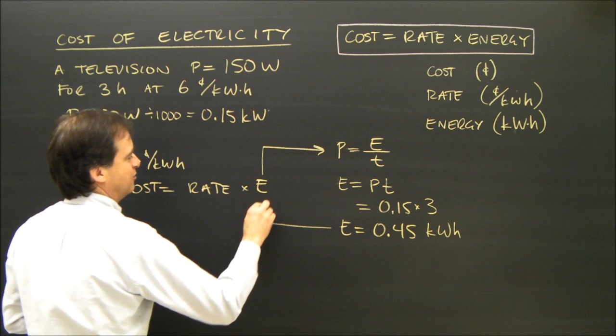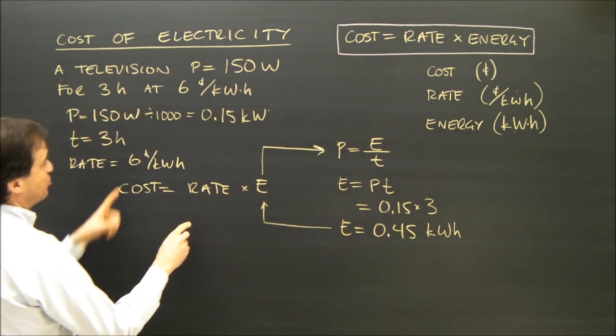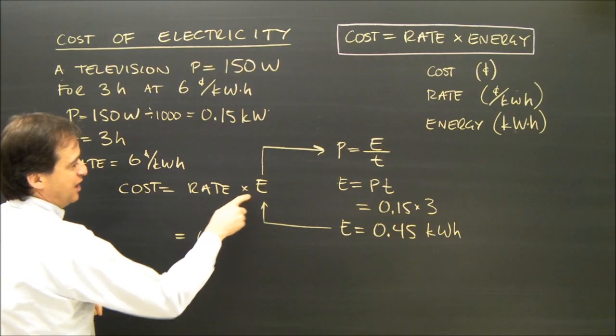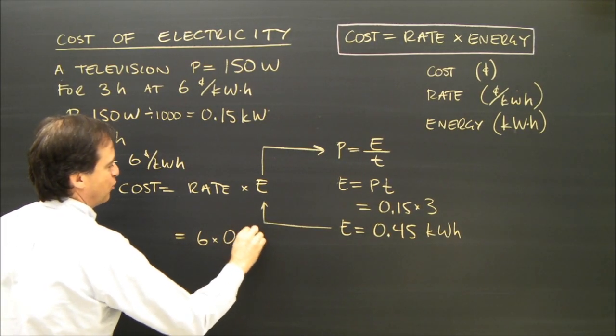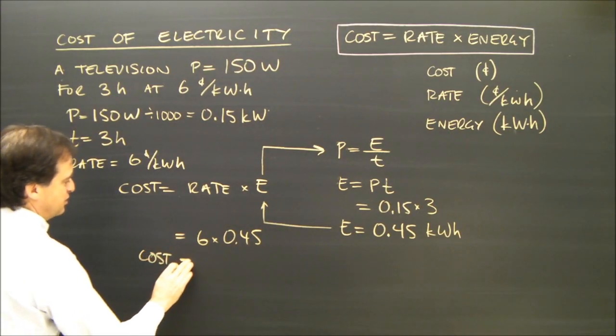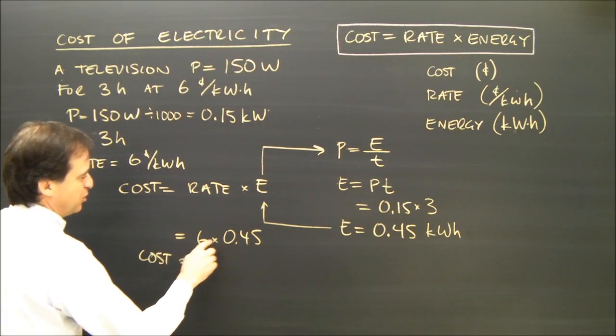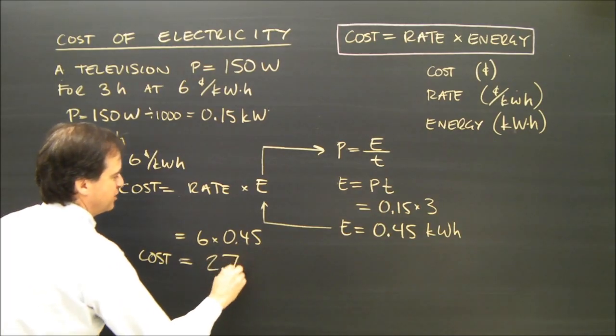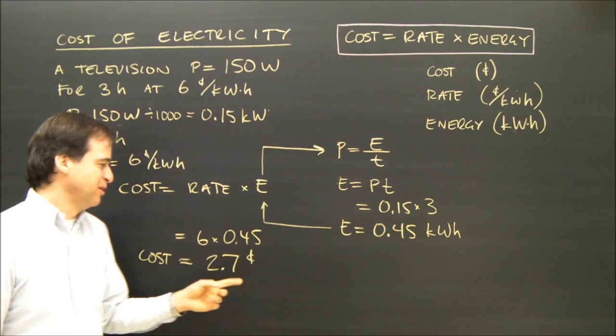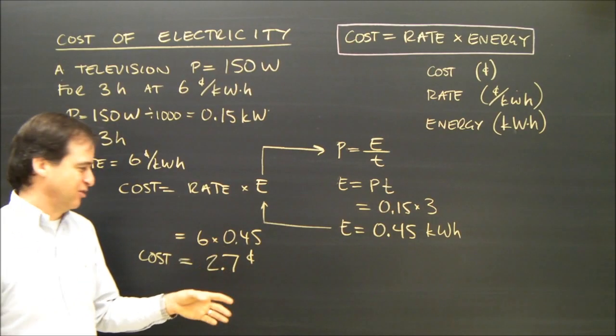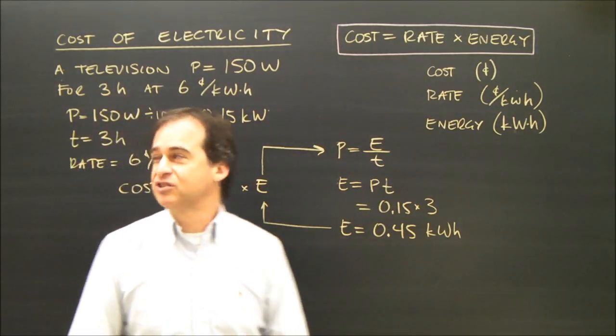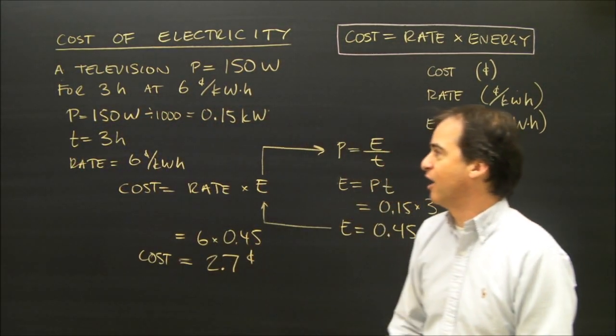Plugging it in there now. So I get my cost is rate, which is six, times the energy, 0.45. So my cost is equal to six times 0.45, which is 2.7 cents. I get a lot of students writing dollars here because we're used to thinking of currency and money in dollars. But it's 2.7 cents. So that's how much it would cost to use this TV for three hours.